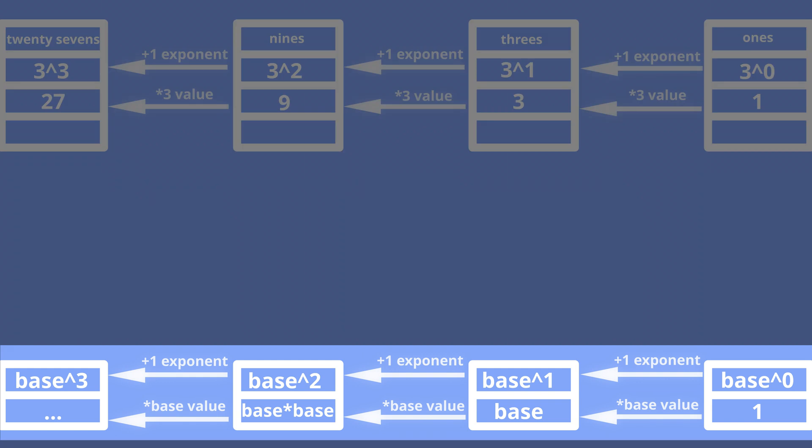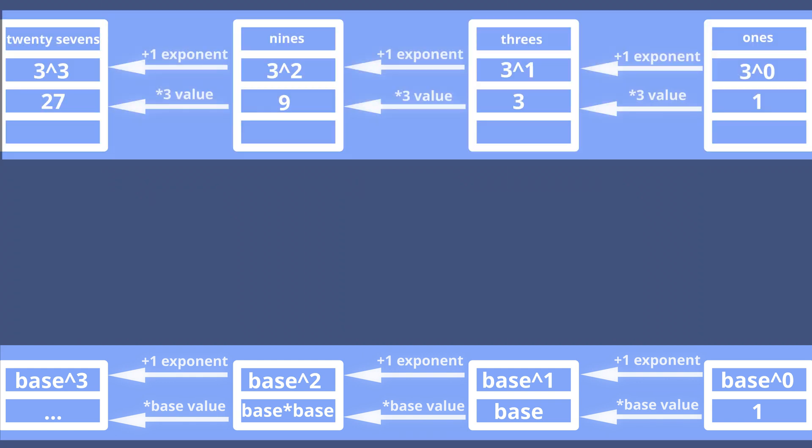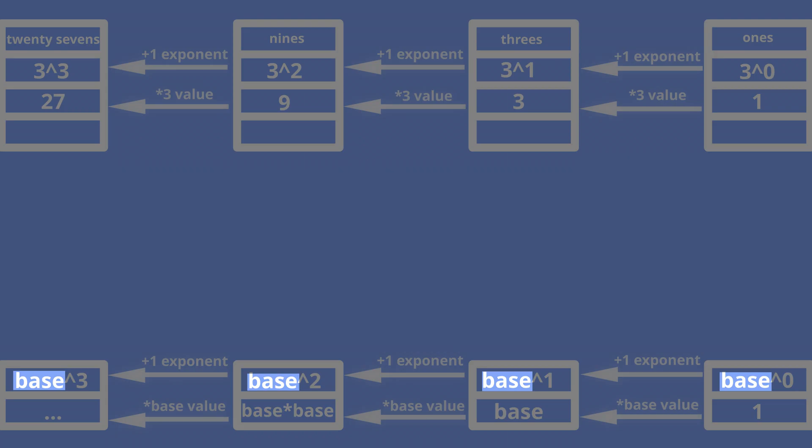Let's apply the general scheme for the base 3 number system. We need to substitute the base with 3. In the extreme right position weight equals 3 to the power of 0, which is 1.